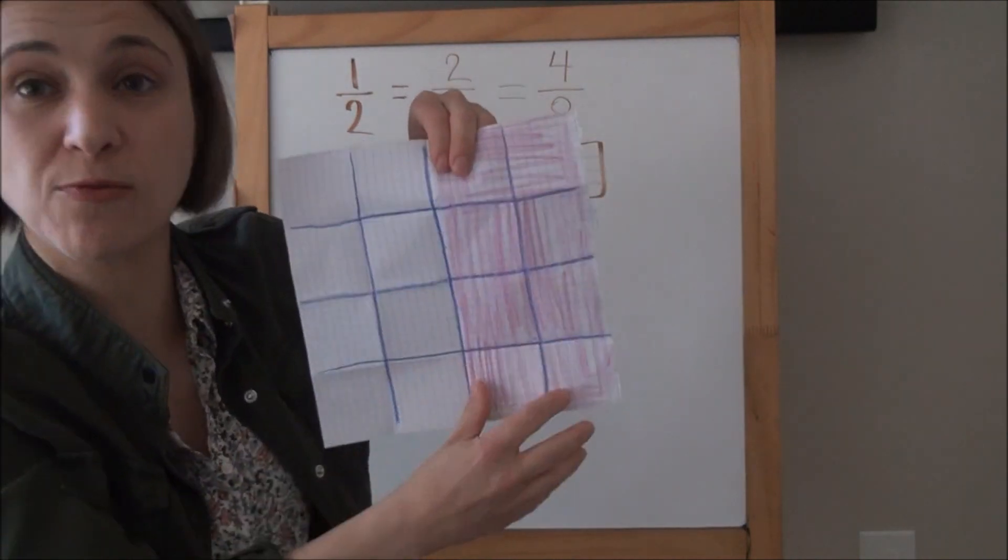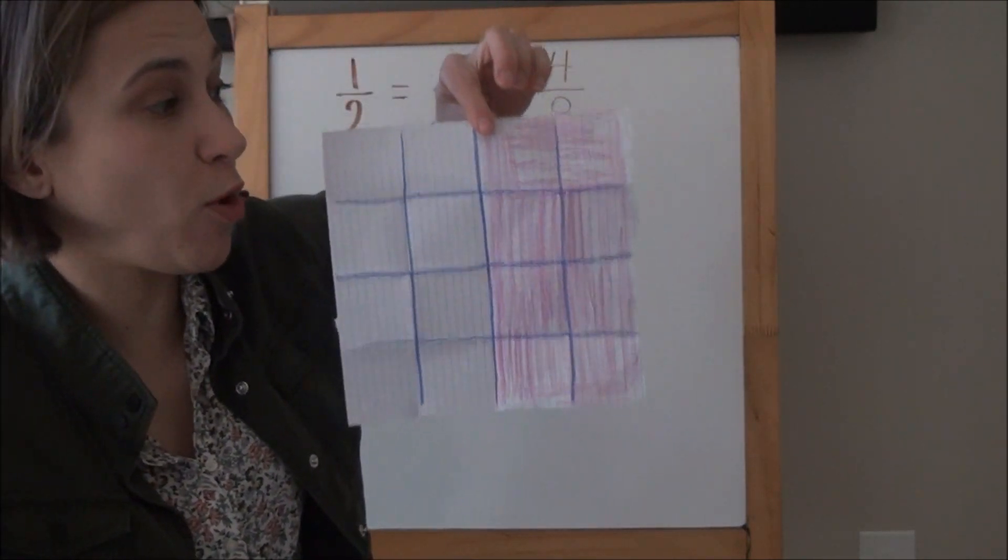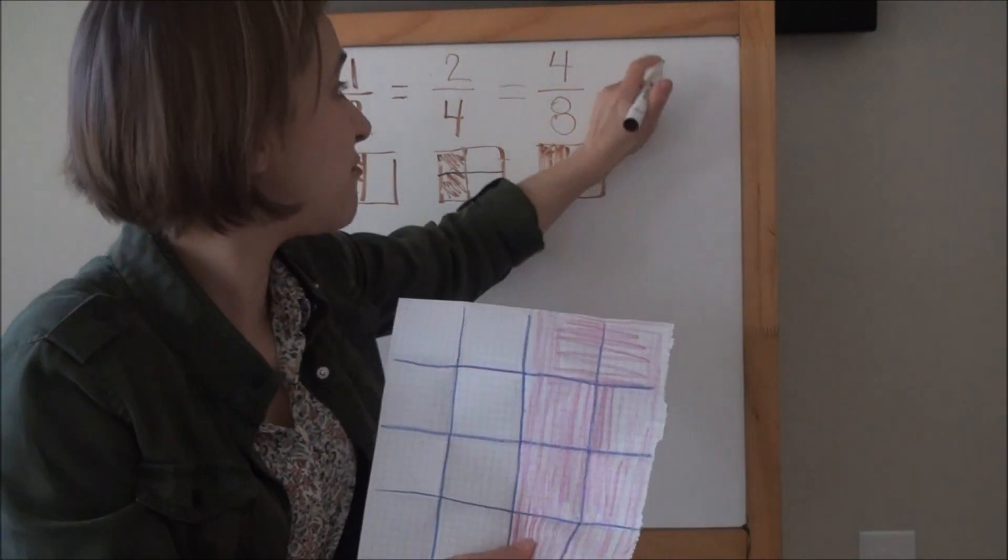Now that is such a different fraction from what we started with, yet it's the same amount because you can see it is still really just one-half. It's crazy to think that this one-half can be represented in so many different ways, even though it's really just the same amount.